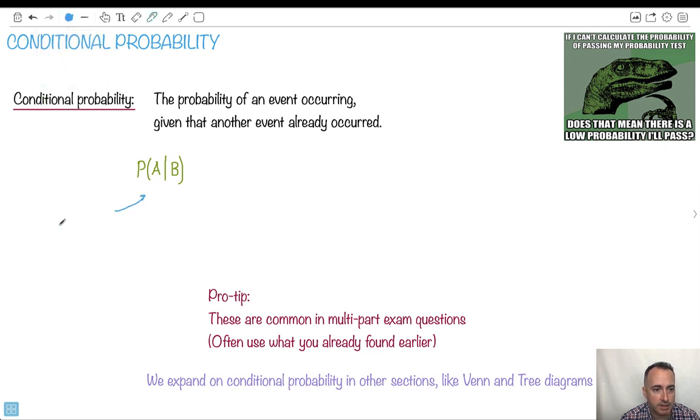This is probability of A, probability of A, given, this is the important thing, given that B already happened. Okay, this is really the key to it. And in fact, although this equation looks complicated, this is the key to it right here, just knowing this. Probability of A, given that B already happened. Once you know this, then you can know to use this equation here.